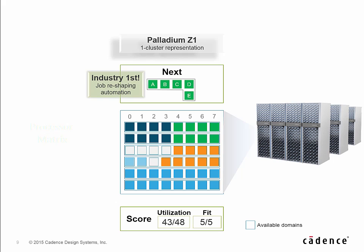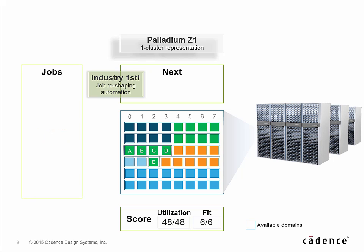Now here's where the advanced job reshaping algorithm kicks in. The Palladium Z1 software automatically identifies alternative shapes for the five domain job. Once an appropriate shape fits the available domains, the reshaped job is then dispatched to the available domains in the verification computing platform. You don't have to lift a finger to reshape the job. At the end of the day, this results in a constant high utilization of the computing platform — it creates the high score for you.